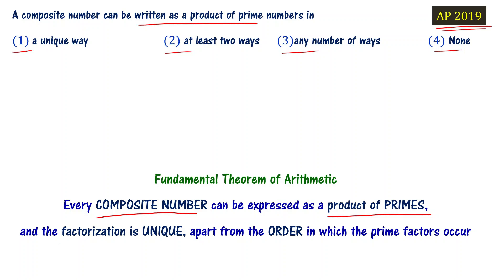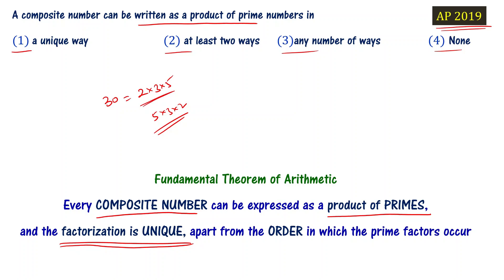The fundamental theorem of arithmetic states that a composite number can be expressed as a product of prime numbers, and the factorization is unique. For example, 30 can be written as 2×3×5. Even if we write 5×3×2, the prime factorization is a product of 2, 3, and 5 — it is unique. So the answer is: a unique way.